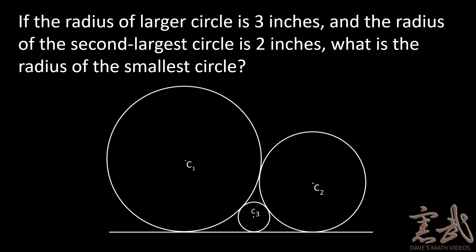Onto the question. If we know that the radius of the larger circle, C1, is 3 inches, and that the radius of the second largest circle, C2, is 2 inches, what then is the radius of the smallest circle?